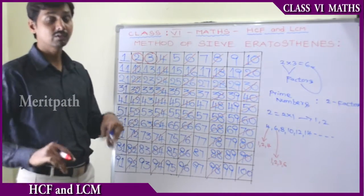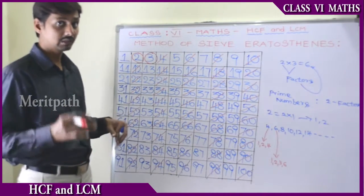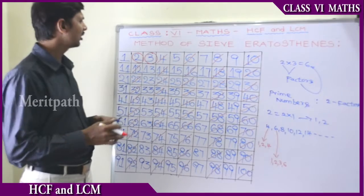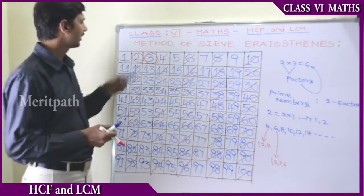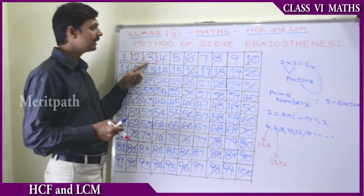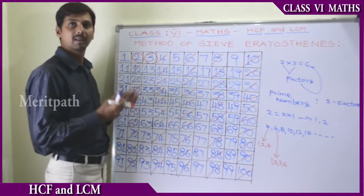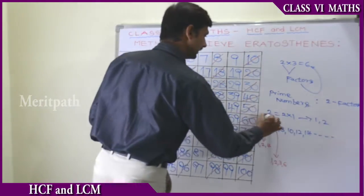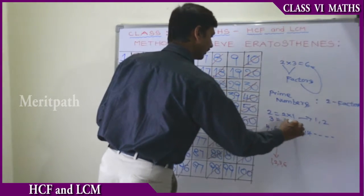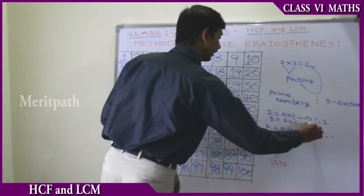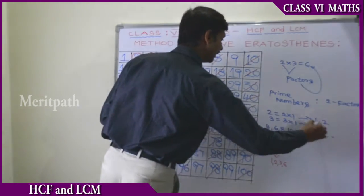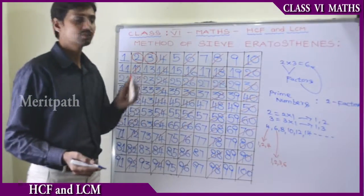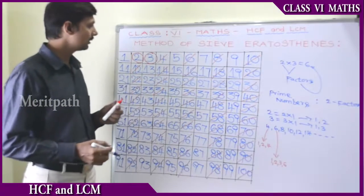So these multiples are having more than 2 factors. These numbers are not prime numbers. So let's see — we know that 3 is a prime number because 3 equals 3 into 1, and the factors are 1 and 3 only. We don't have any other factors, so 3 is a prime number.